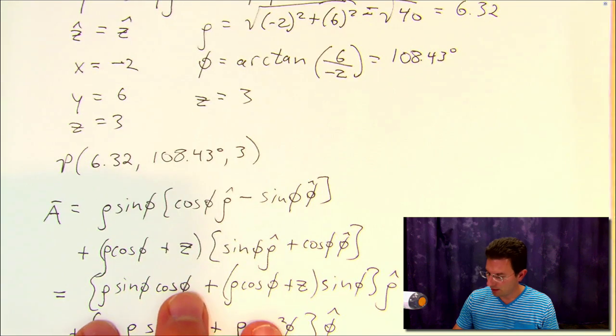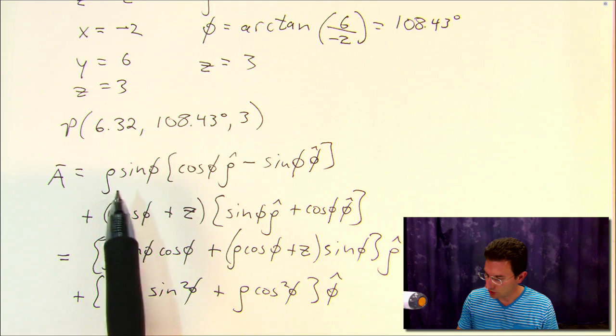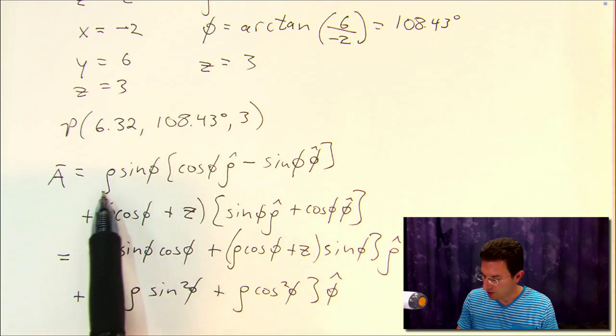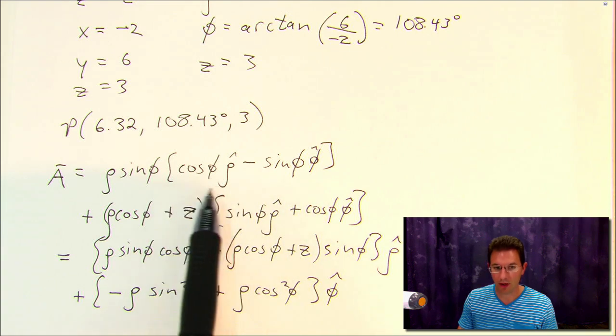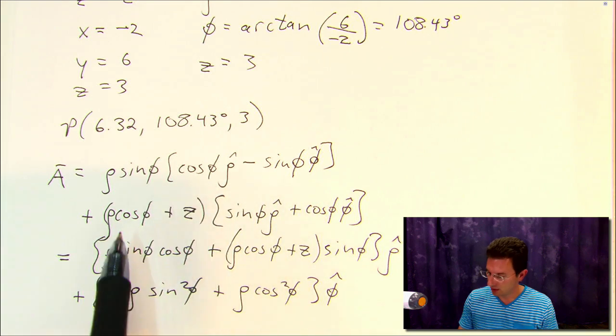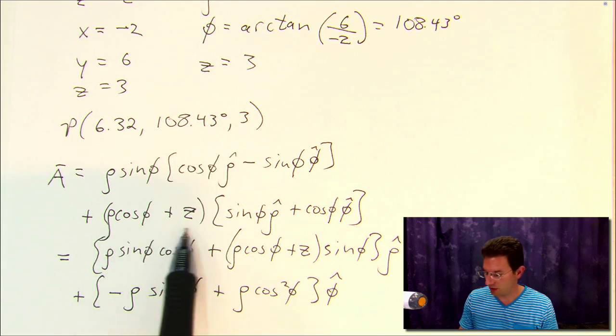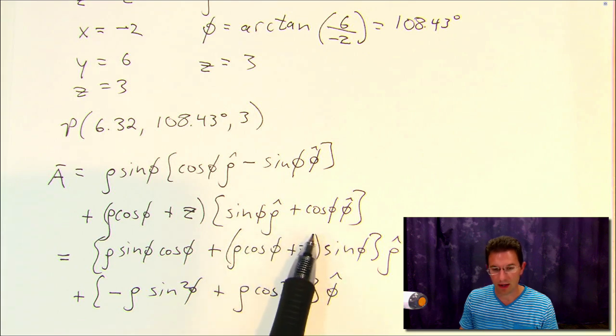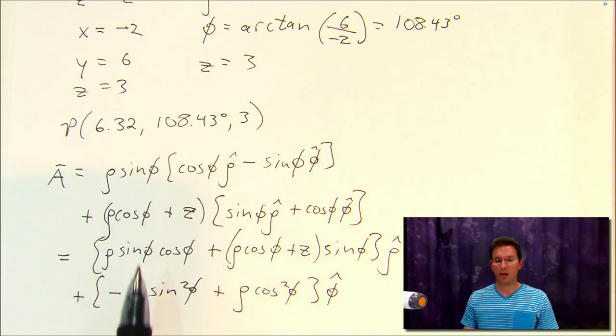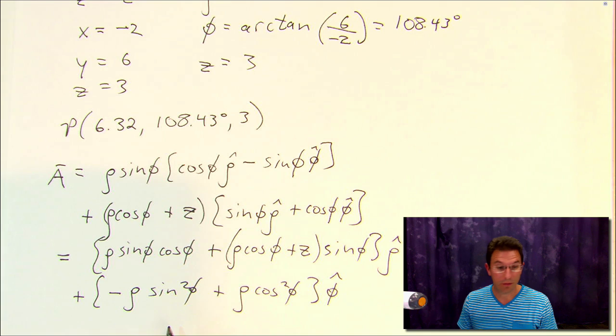So the vector field A is equal to y, that's ρ sin φ, times x̂, that's the quantity here in the square brackets, plus x, that's ρ cos φ, plus z, times ŷ, that's the quantity in these brackets. And then we just simply finish by gathering all the terms in front of ρ̂ and all the terms in front of φ̂.